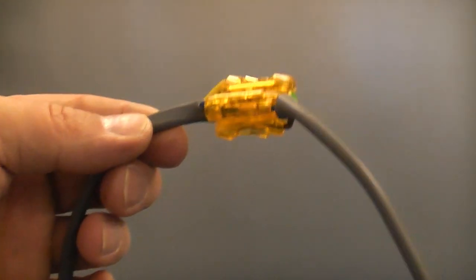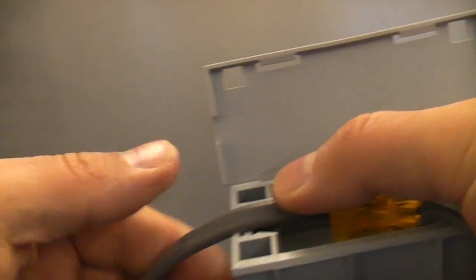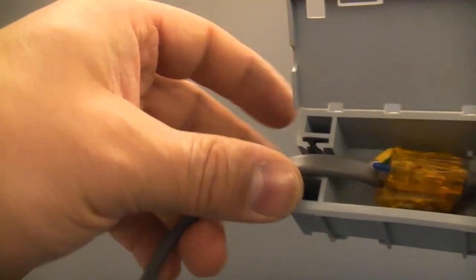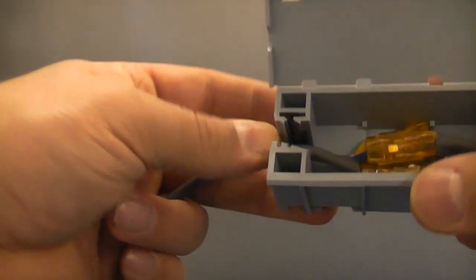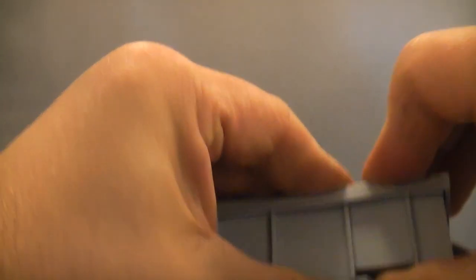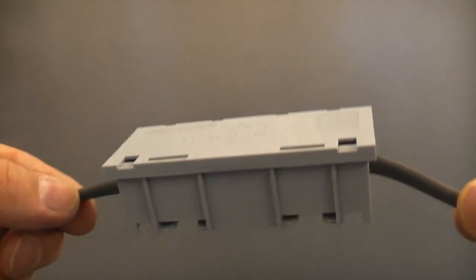Of course, when you've done that, it does need to be in an enclosure. So when I was in the loft, I used a Wago lighting connector. All I did was open it up like that, and then I just close the lid on that, and you've got a good safe connection that is extremely quick.